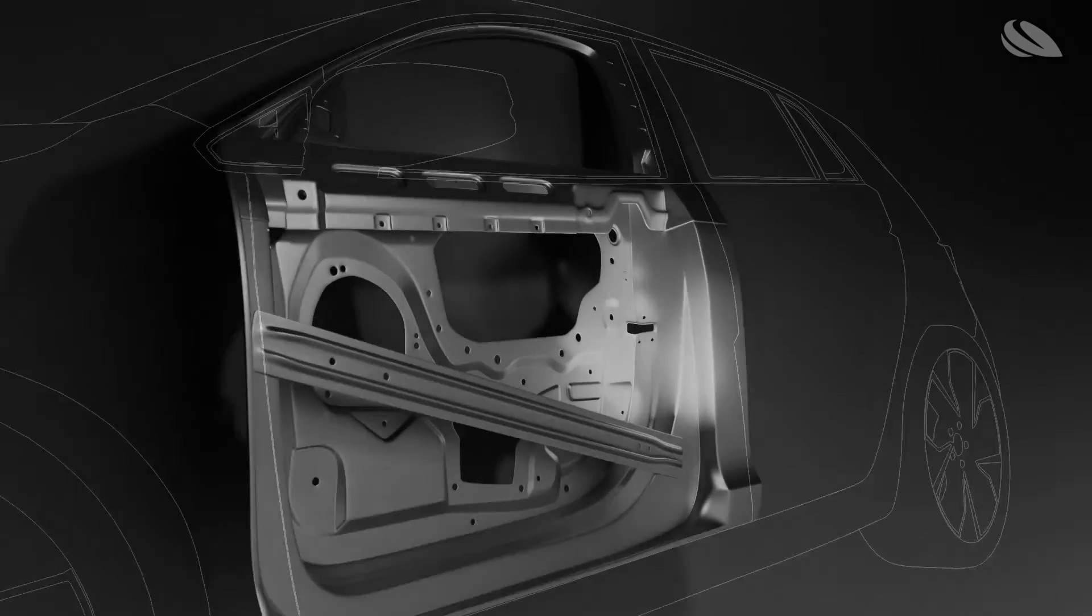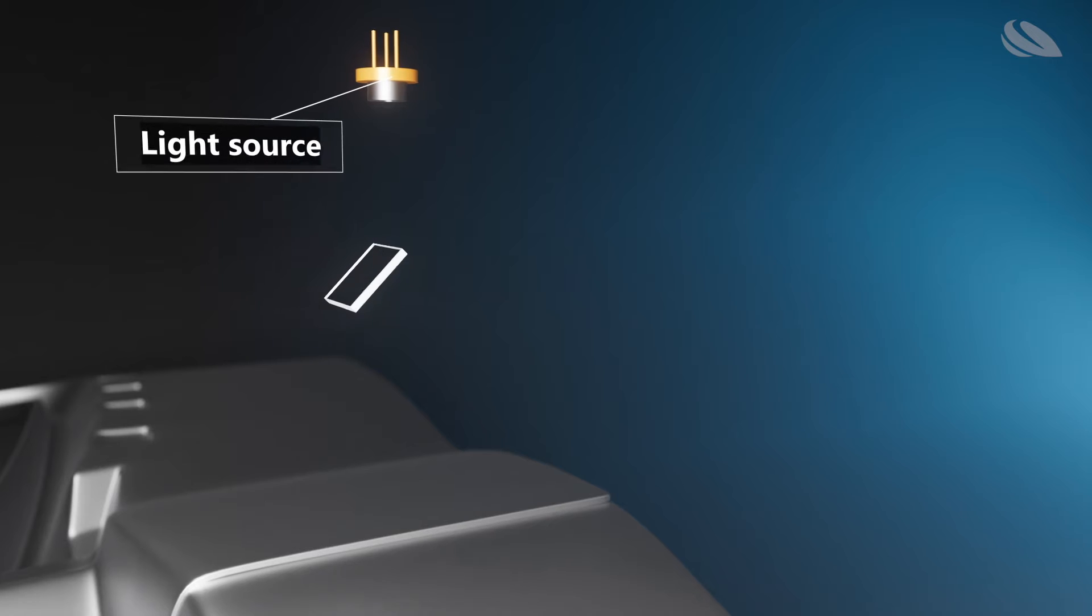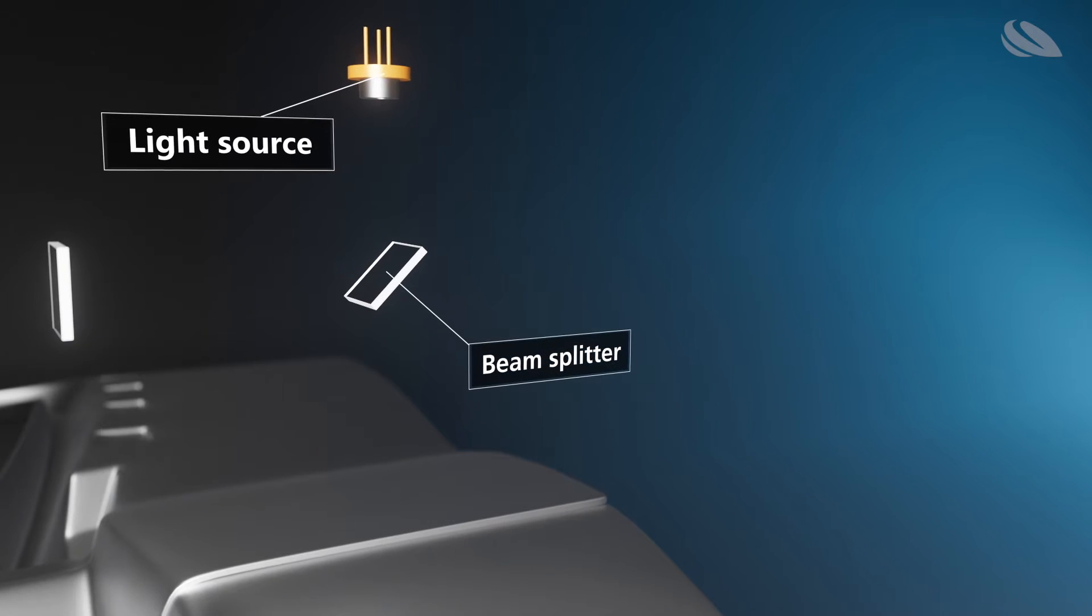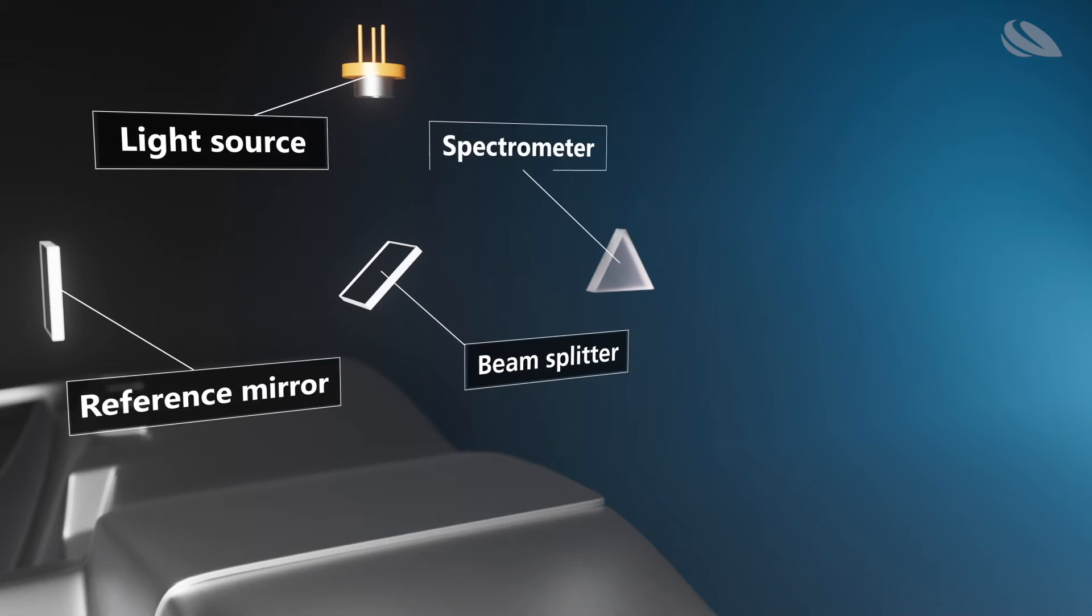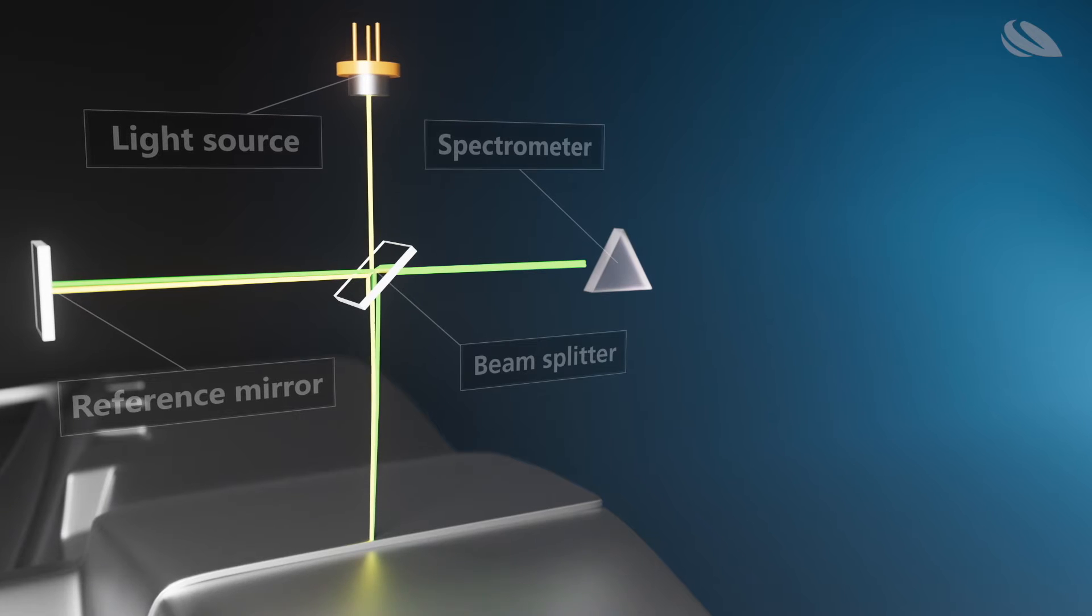OCT is a technique for measuring distances. An OCT system consists of a coherent light source and an interferometric setup made up of a reference path, a measurement path, and a spectrometer.